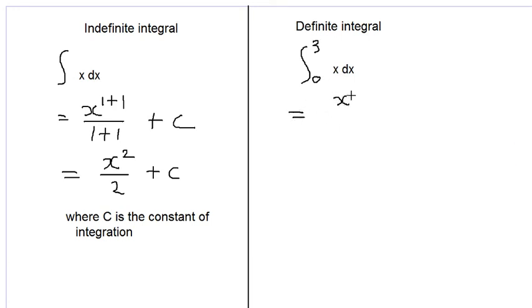This will be x squared over 2 between the limits of 3 and 0. We then substitute 3 for x so we will have 3 squared over 2